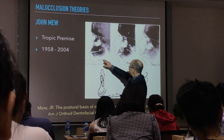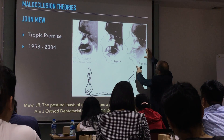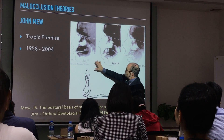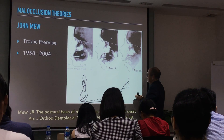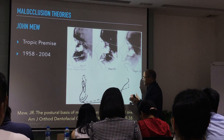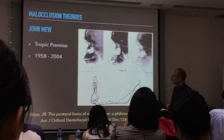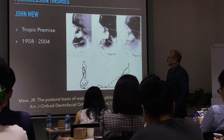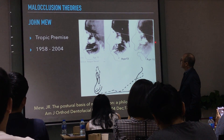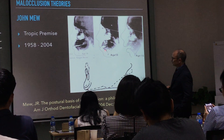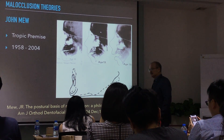Professor Mel first published his topic premise hypothesis in 1958, and in 2004 he published an update reviewing the relationship between body posture and malocclusion. In his theory, he put forward an idea of muscle usage — he said that most of the problems of malocclusion have to do with function and muscle usage.